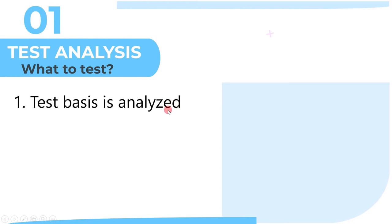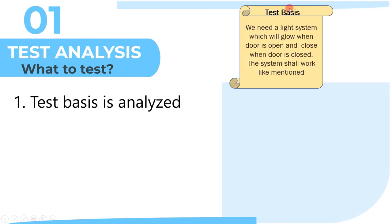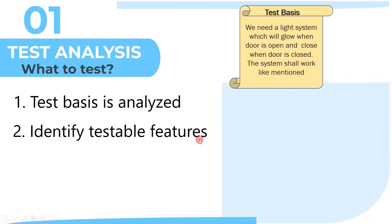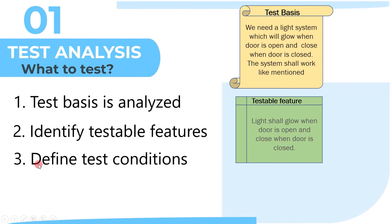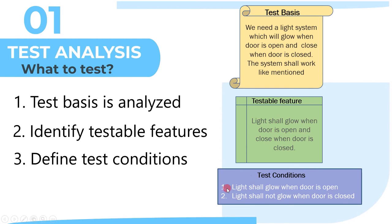During this stage we analyze the requirement. Suppose the requirement is: we need a light system which will glow when the door is open and close when the door is closed, and the system should work as mentioned. The second step is to identify testable features — after analyzing the requirement we extract testable features. From this requirement, the testable feature is: light should glow when the door is open and close when the door is closed. The third step is to define test conditions: the light should glow when the door is open, and the light should not glow when the door is closed.